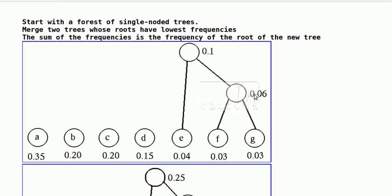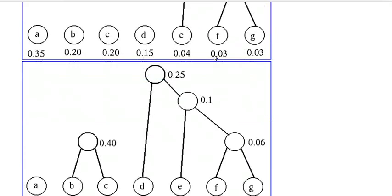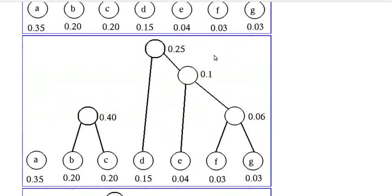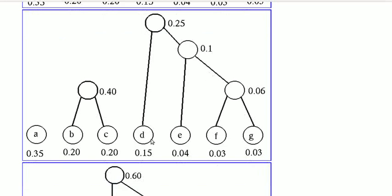Now 0.04 and 0.06 are the lowest, so we merge the nodes to obtain a frequency of 0.04 plus 0.06 equal to 0.1. Now the lowest are 0.1 and 0.15. We merge them to get 0.25.